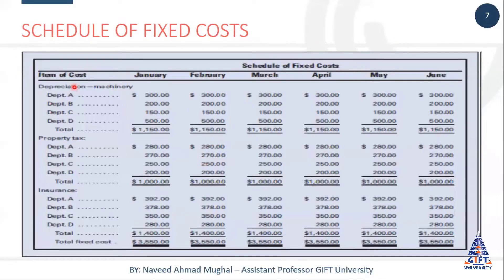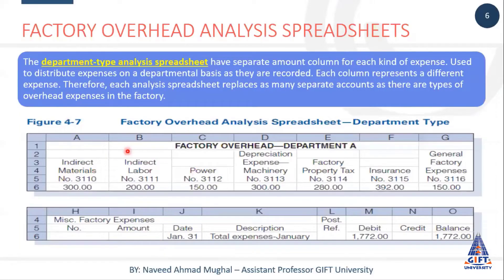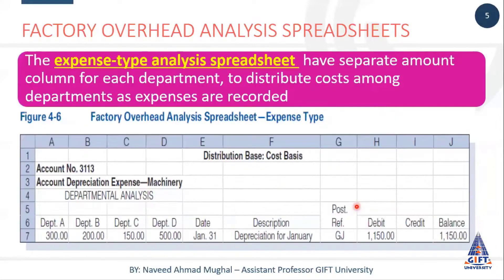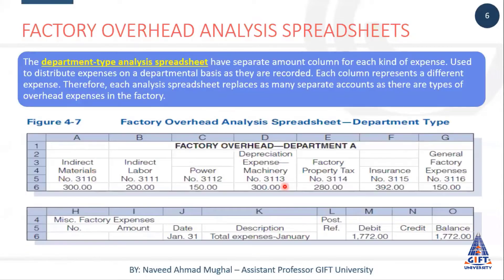Aur isko karne ka maqsad ye hoti hai ki yeh document hamein batata hai ki hamare har mahine ke fixed expenses kitne hain. Yeh document hamein batata hai ki hamare har department ke expenses kitne hain. Aur yeh humein batata hai ki hamara har expense jo hai woh total is period ke andar kitna hai, aur uski jo different departments ki division hai woh kitni hai. So every document has its purpose.